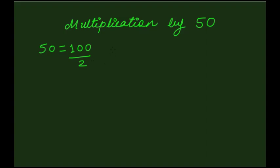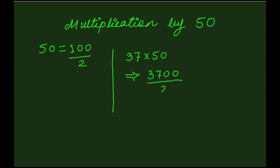Consider an example where we have to multiply the number 37 by 50. First, we'll add 2 zeros to the right of the given number, that is 3700, and then divide it by 2. After performing this division, we get 1850.